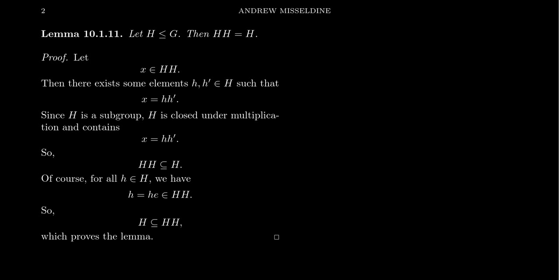Before we introduce a factor group or a quotient group, let me first introduce the idea of coset multiplication, which is what the factor group's operation is going to be. As a lemma to help us get to coset multiplication, let's take a subset H of a group G. I want to prove that if you take the product H times H — the Frobenius product we introduced earlier in this series — you get back H. So in terms of Frobenius multiplication, a subgroup is an idempotent element: its square is equal to itself.